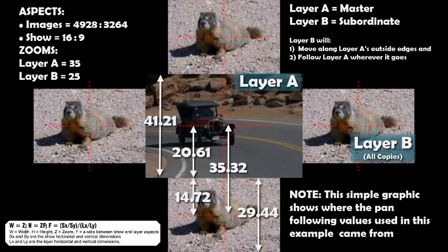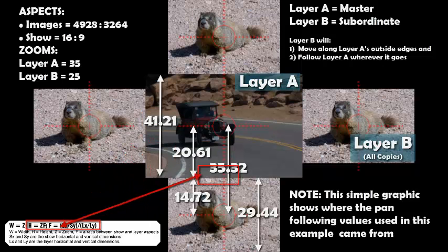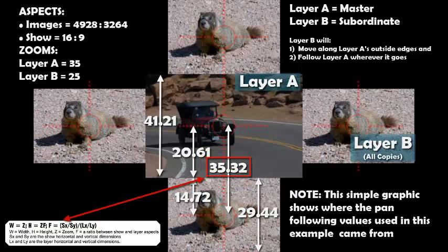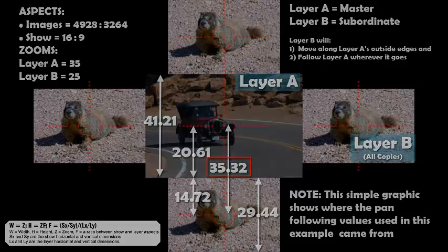Now let's deal with the heights. The height of the center layer, layer A, is 41.21, and the groundhog, layer B, has a height of 29.44 with the given half width shown. When you calculate the distance between the two centers it's 35.32 with the round off.